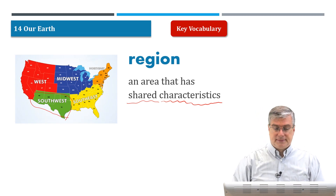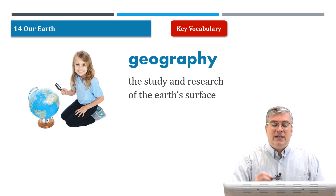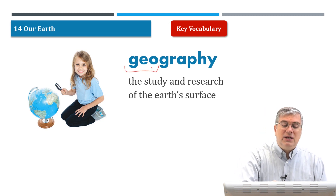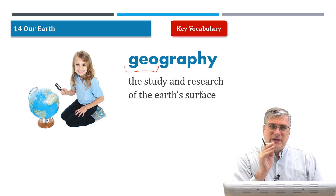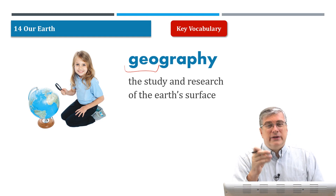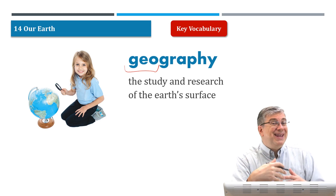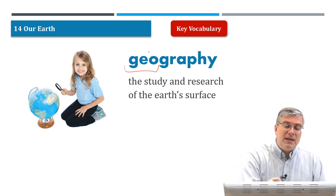Another important word for this lesson is 'geography.' Geography is the study and research of the earth's surface. Here's a little trick: 'geo' is a prefix — it comes before the root word — and 'geo' means earth. So whenever you see a word that starts with 'geo,' you know it relates to the earth. For example, geography is the study and mapping of the earth's surface; geology is the study of the earth.